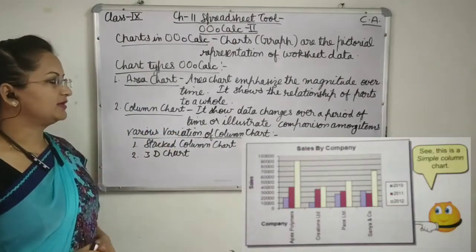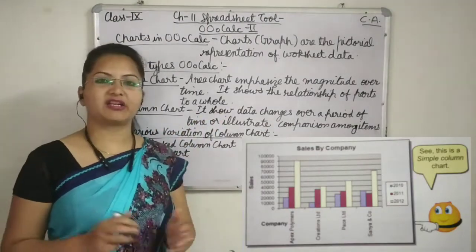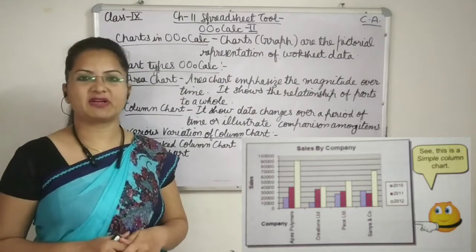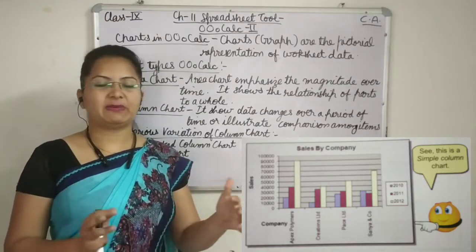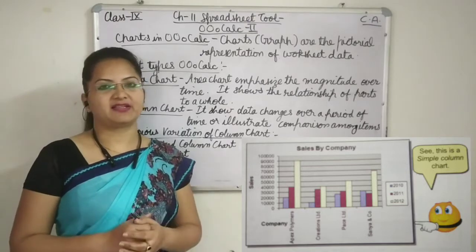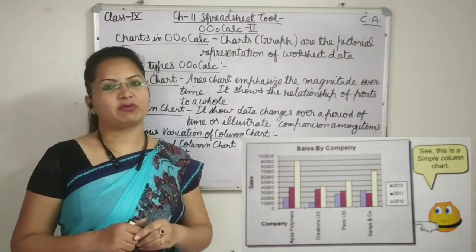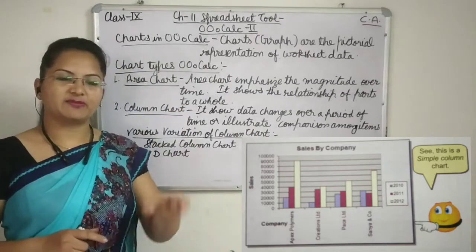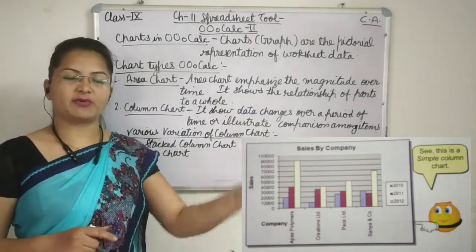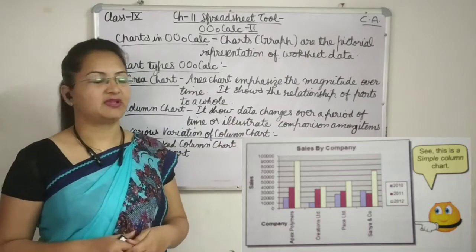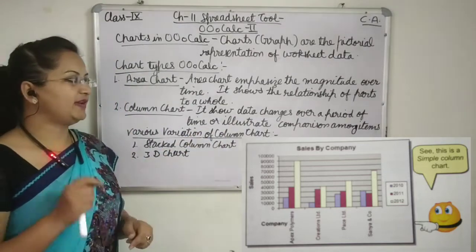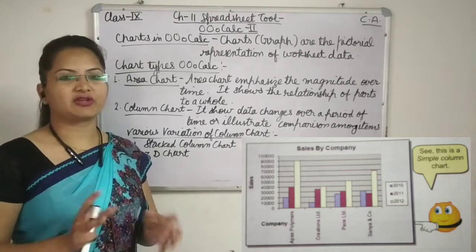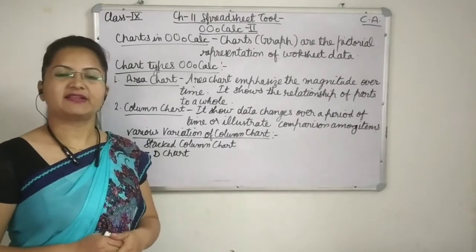Now column chart. It shows the data change over a period of time and it also illustrates the comparison among various items. We will be able to compare various data series in it. Once the data points have been plotted in the graph, here in column chart vertical columns are used for a particular data item. Every bar will be of different color and it will help us to compare data series efficiently.